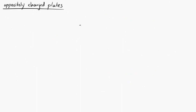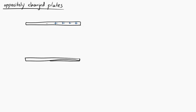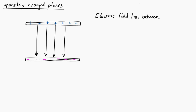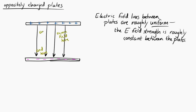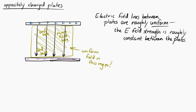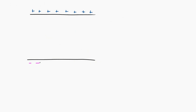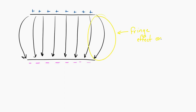The last situation is two oppositely charged plates near each other. Between the plates, the electric field is approximately uniform — the field strength is roughly constant everywhere between the plates and points in the same direction, away from the positive plate and toward the negative plate. There are fringe effects near the edges, but in the middle region the field is very close to uniform.